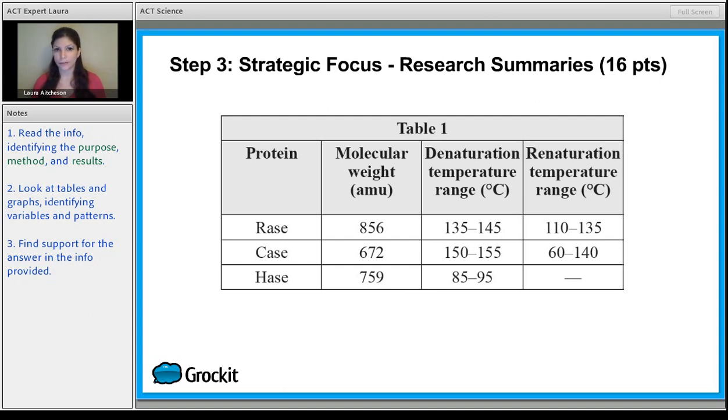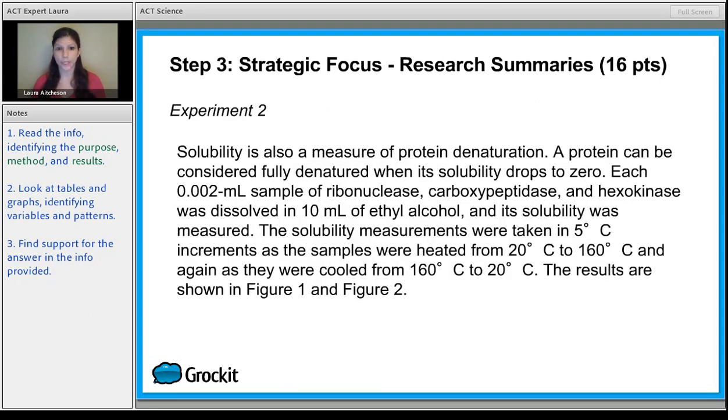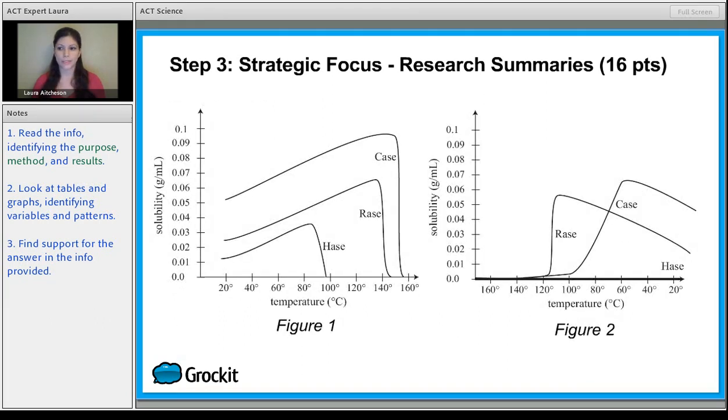Now that we have a good idea of what's happening in experiment one, let's see how that's different from experiment two. Go ahead and read experiment two. For experiment two, you have an additional component. You have 10 milliliters of ethyl alcohol and this idea of solubility. So when we take a look at the results of experiment two, we want to figure out how does that match up with what was given in experiment one?